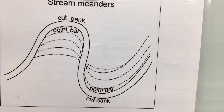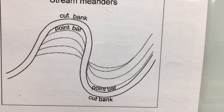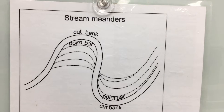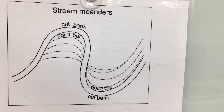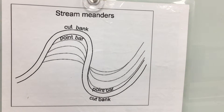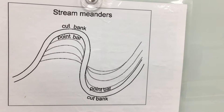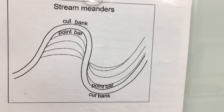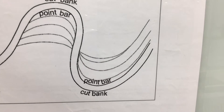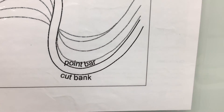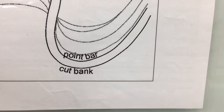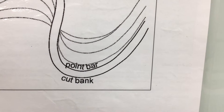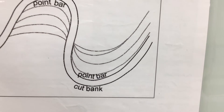In a meander curve, if we look at the curve from the perspective of an upside-down U shape, we can see that the cut bank is always at the top of the U, and the point bar is on the inside of the U. As you move into the next curve it looks like it flip-flops, but if we keep the perspective of the upside-down U, the cut bank is the top and the point bar is on the inside.